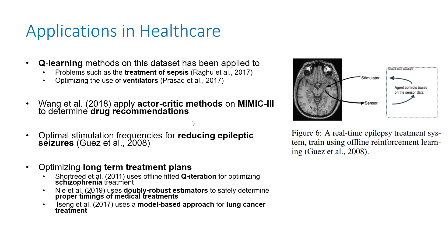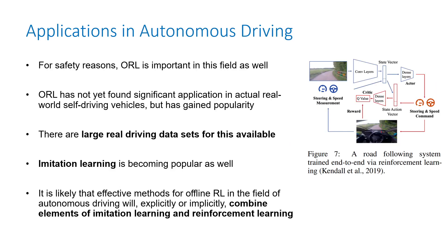Offline reinforcement learning has been used for healthcare for quite a long time — in 2008 it was used for reducing epileptic seizures. Q-learning and actor-critic methods have been used for drug recommendations, schizophrenia treatment, and lung cancer treatment. For autonomous driving, the survey mentions it has not yet gained significant application but is gaining popularity.